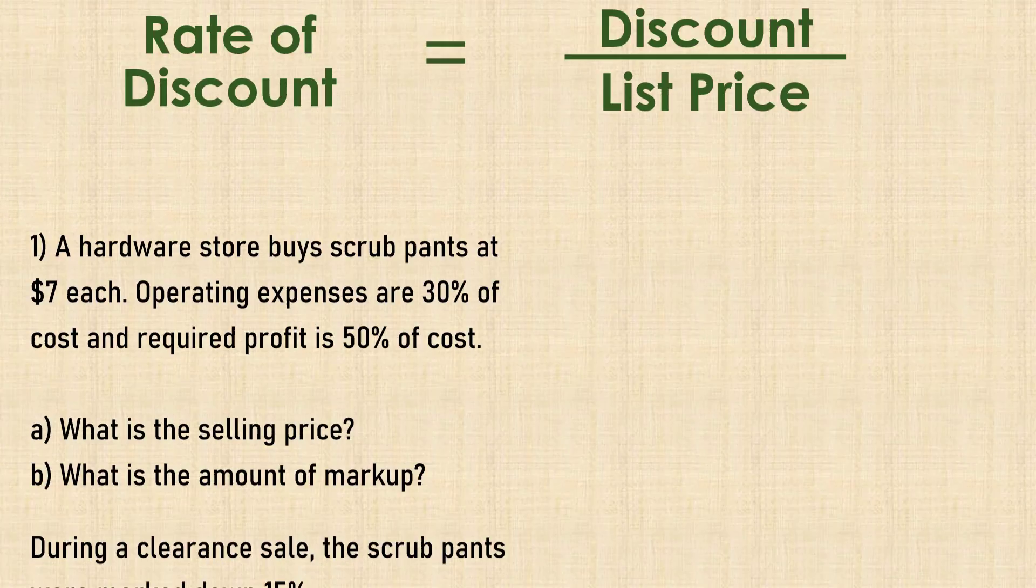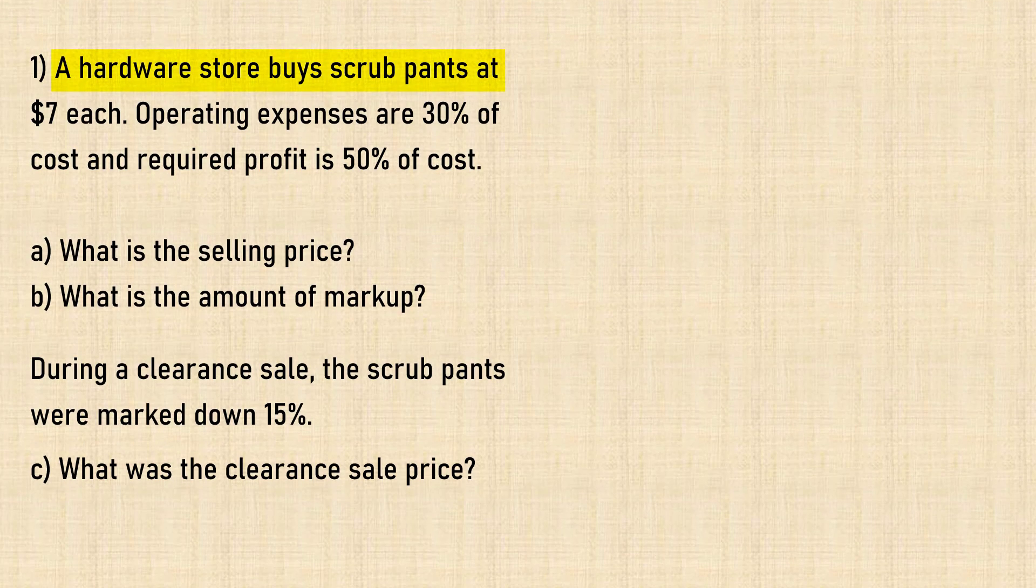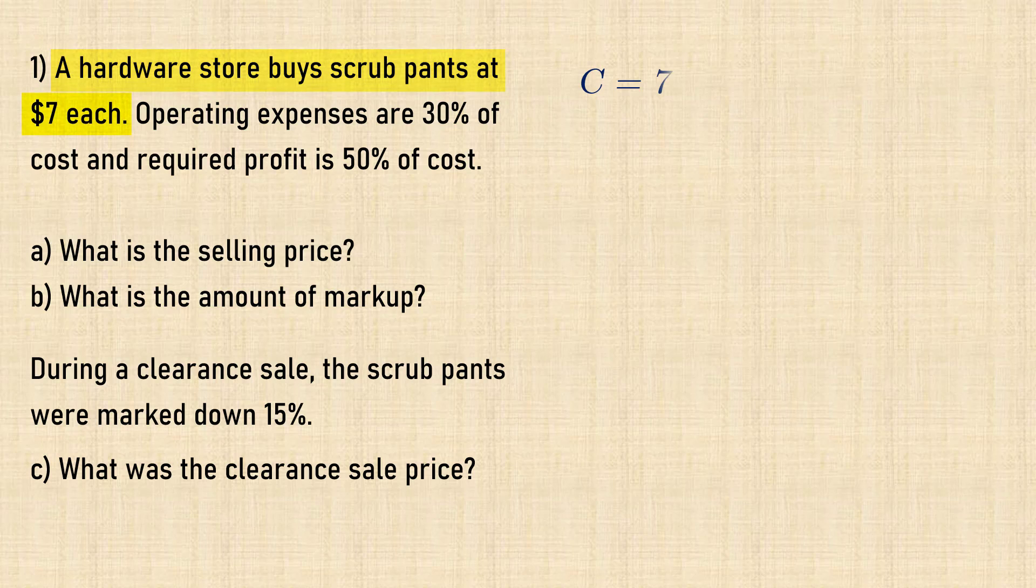Now let's solve some problems. A hardware store buys scrub pants at $7 each. Operating expenses are 30% of cost and required profit is 50% of cost. That is, expenses equals $0.3 times $7, which is $2.10.